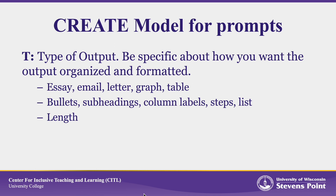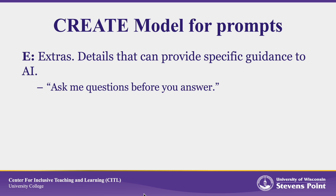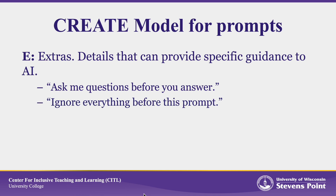The more that you include, the better the output will be. Finally, the second E in CREATE is for Extras — details that can provide specific guidance to the AI. One effective extra is 'ask me questions before you answer,' a great way to get the AI to help you construct elements of the prompt when you aren't sure what things you should want in the output. Another is 'ignore everything before this prompt,' useful because large language model AI programs include all prior conversation, and sometimes it's useful to get the AI to start over rather than keep modifying what it's been doing.